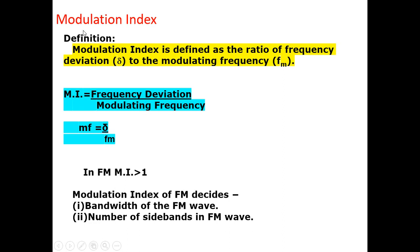In FM, one important definition is the modulation index, normally indicated by Mi. The modulation index is defined as the ratio of the frequency deviation to the modulating frequency, given by Mi = Δ / FM, where Δ is frequency deviation and FM is the modulating frequency. In FM, Mi is normally kept above 1, meaning the deviation is more or higher. The modulation index of FM determines the bandwidth of the FM wave and the number of sidebands.